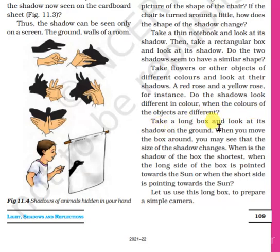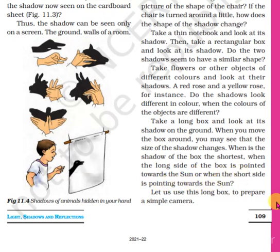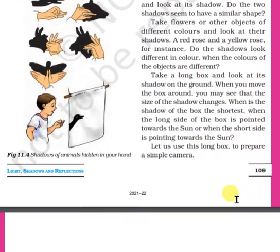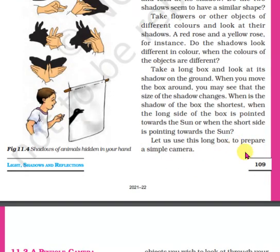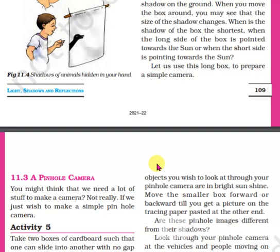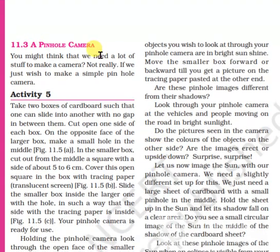A red rose and a yellow rose, for instance — do the shadows look different in color when the colors of the objects are different? Take a long box and look at its shadow on the ground. When you move the box around, you may see that the size of the shadow changes. When is the shadow of the box the shortest — when the long side of the box is pointed towards the sun, or when the short side is pointing towards the sun? Let us use this long box to prepare a simple camera — a pinhole camera. We will discuss this in the next video. Thank you.